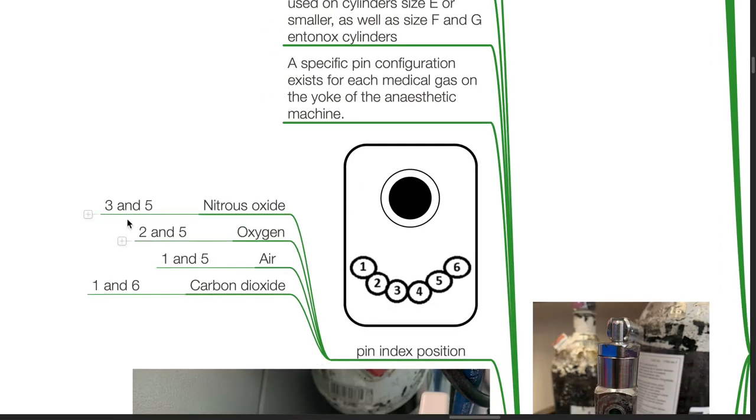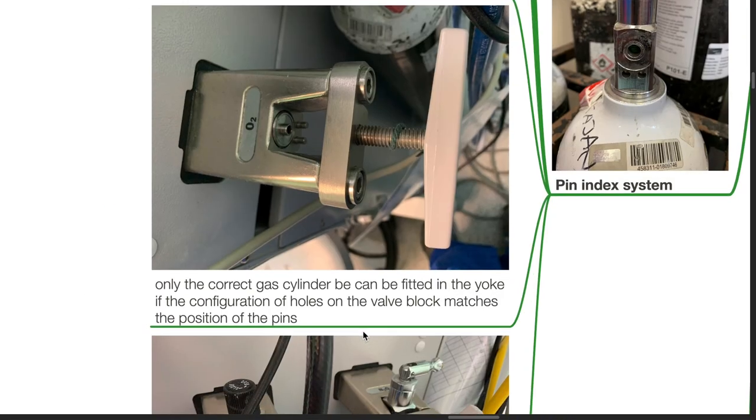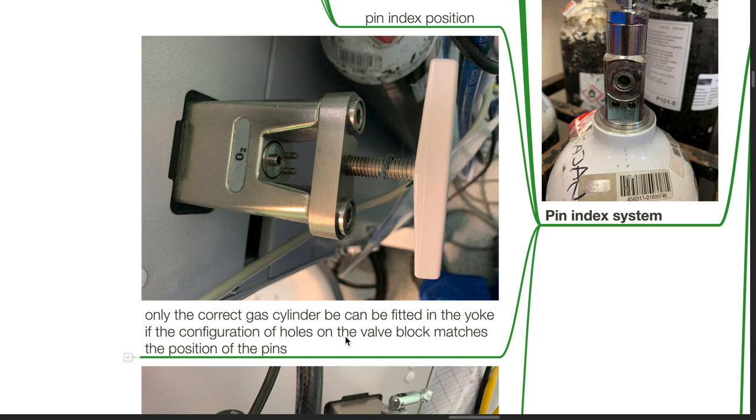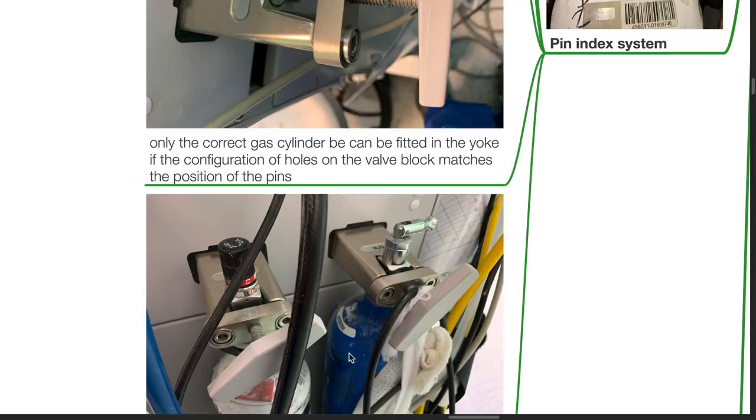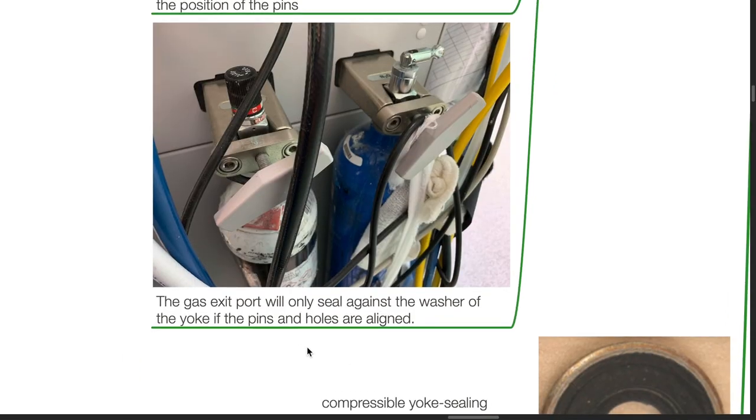Nitrous oxide 3 and 5, oxygen 2 and 5, air 1 and 5, and carbon dioxide at 1 and 6 pin index positions. Only the correct gas cylinder can be fitted in the yoke if the configuration of the holes on the valve block matches the positions of the pins. The gas exit port will only seal against the washer of the yoke if the pins and holes are aligned.